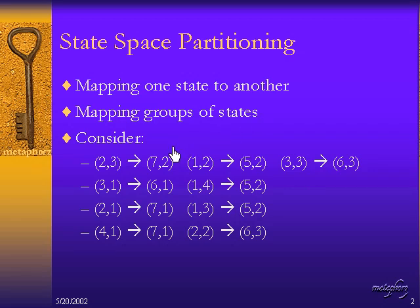For example, let's consider these individual state transitions. Let's assume you have a state space that is in the Euclidean plane, x comma y, and say that 2 comma 3, where 2 is the value of x and 3 is the value of y, that represents a state of the system. And if the system is in this state at a particular time, at the next time it will move to this state.